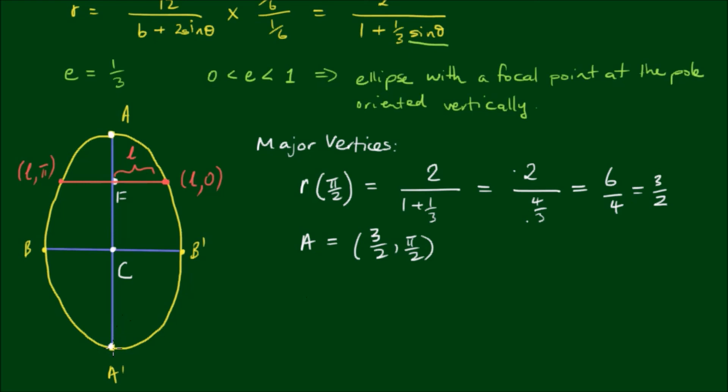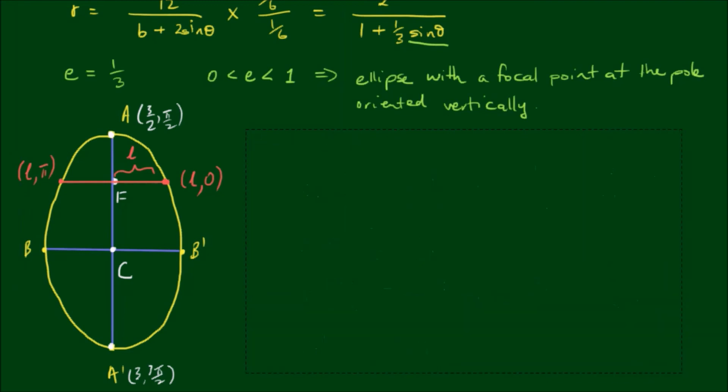For A prime we want to find what r is when the angle is at 3 pi on 2, or 270 degrees. So substituting this in, we have 2 divided by 1 plus... now, actually, minus because sine of 3 pi on 2 is equal to minus 1. So one third times minus 1 gives minus one third. So we have 2 on the top divided by 1 minus one third is equal to two thirds. So this will be the equivalent of 6 over 2, which is equal to 3. So A prime is at the polar coordinates of 3, comma, 3 pi on 2. Okay, so we can label that on our diagram.